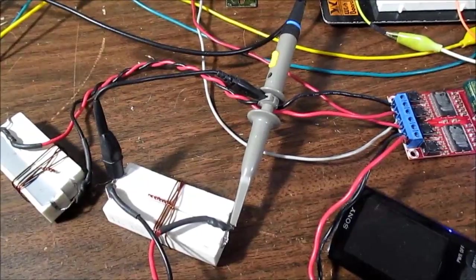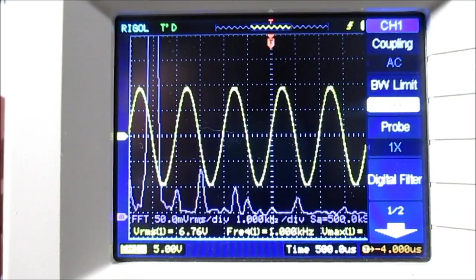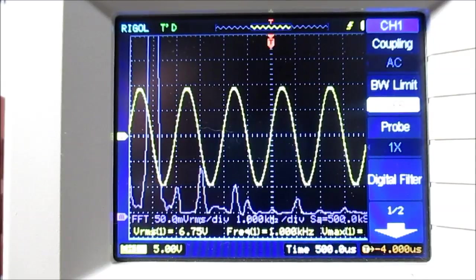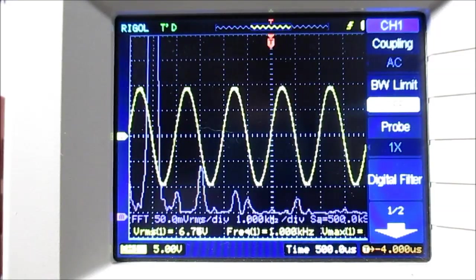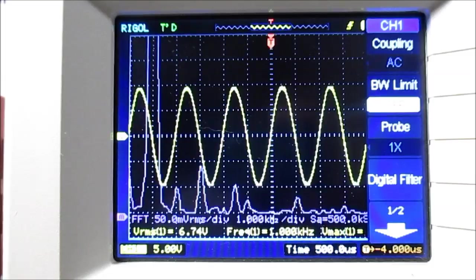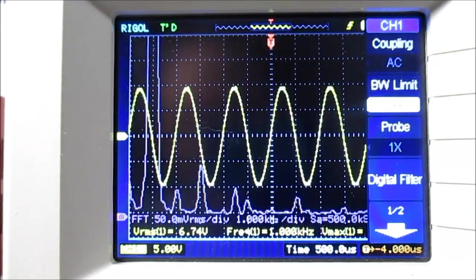Also take a look at the distortion and the frequency response. Okay I have everything set up. We are getting 6.76 it looks like, 6.75 volts RMS. 6.75 volts RMS squared divided by 4 ohms, 11.39 watts.